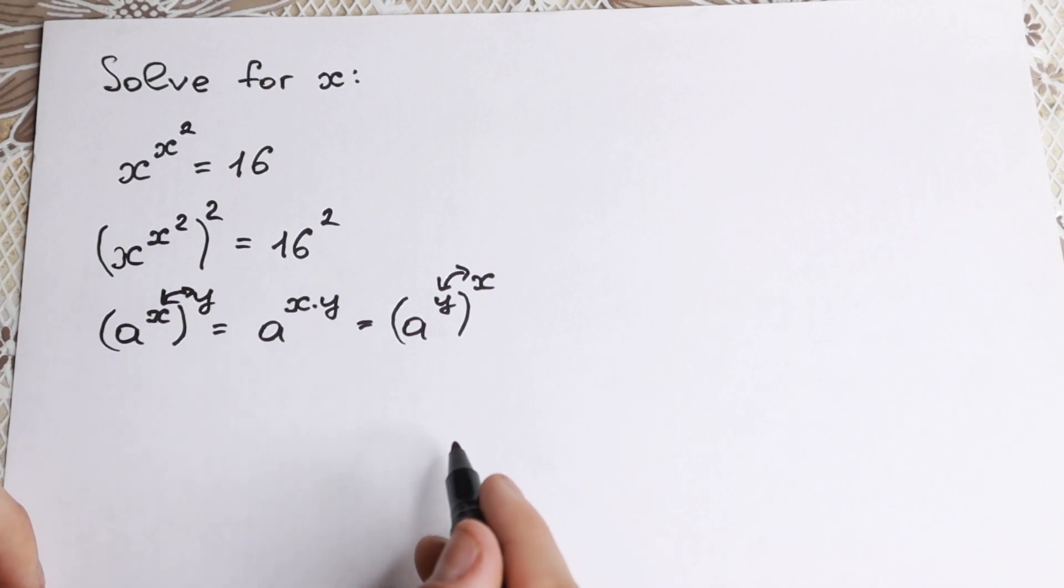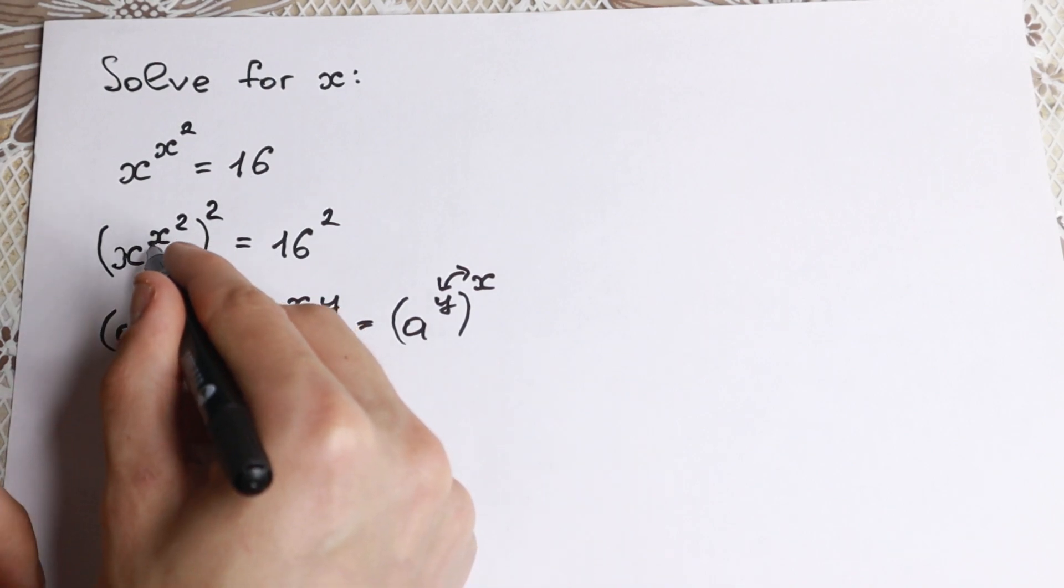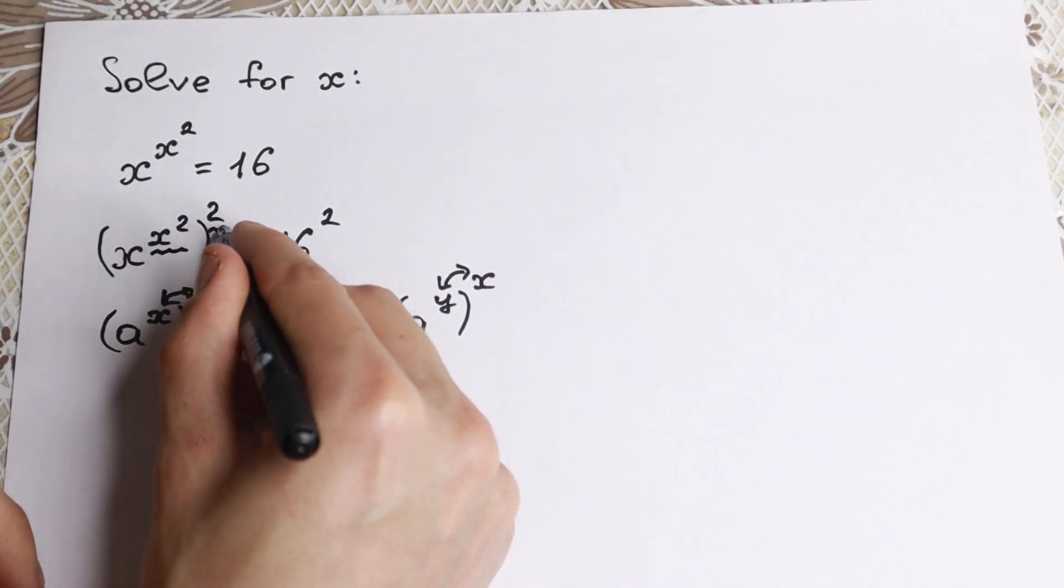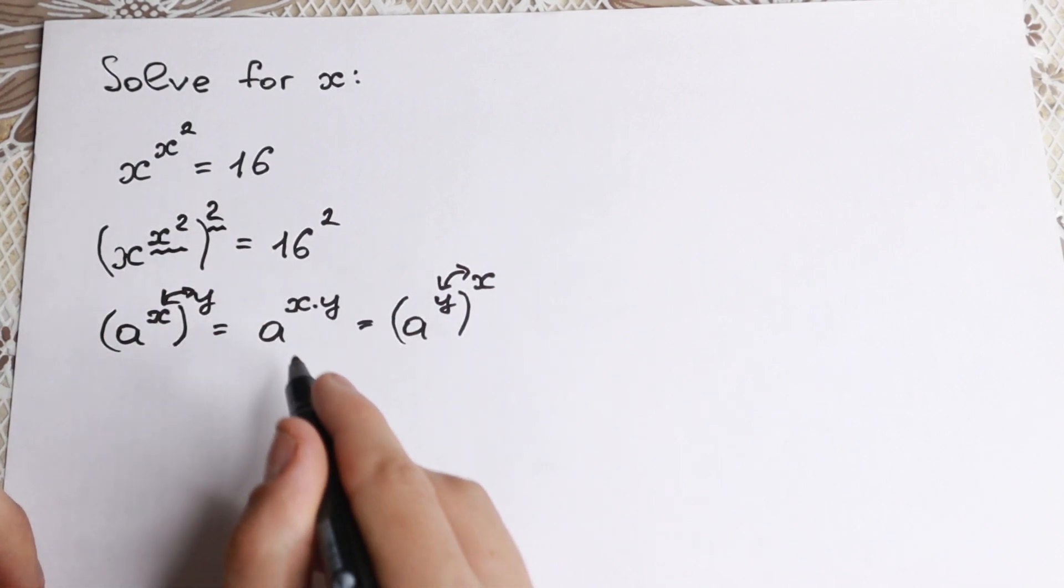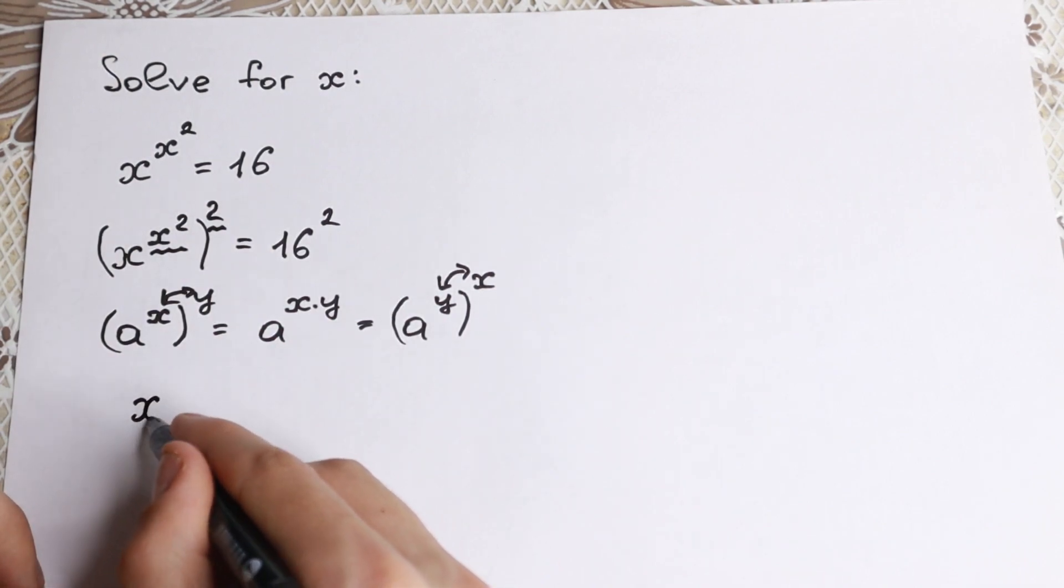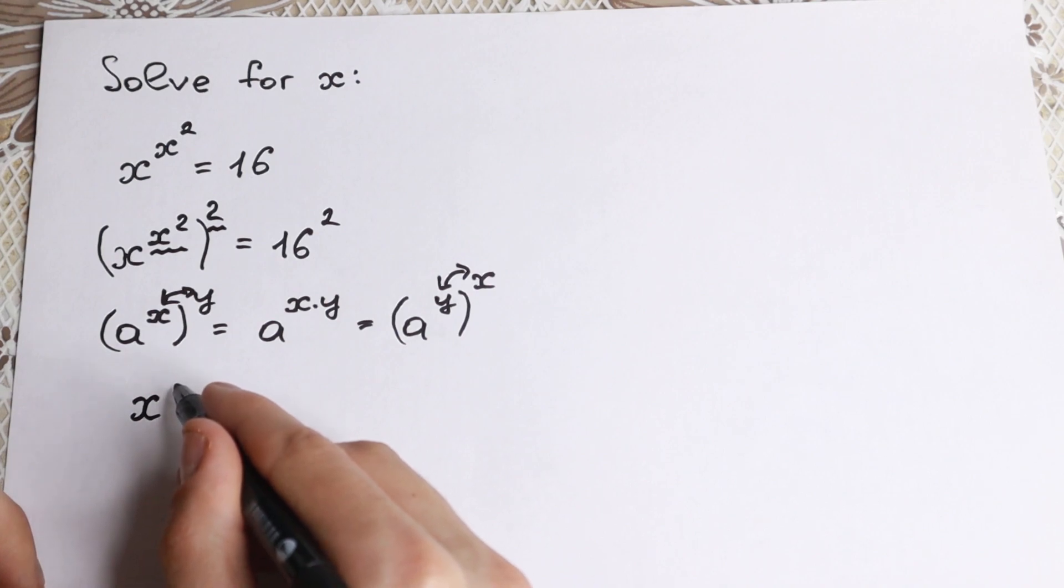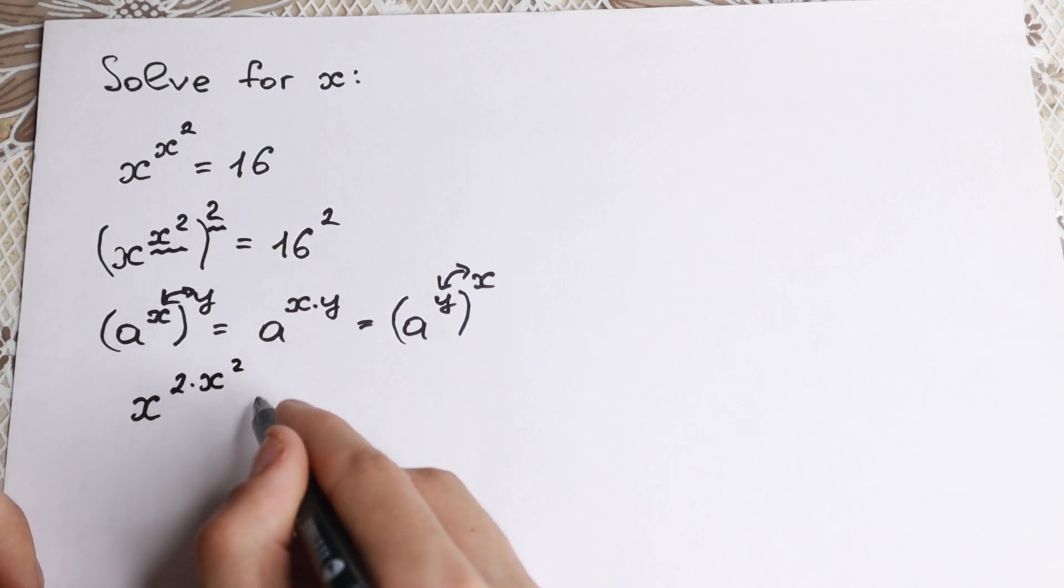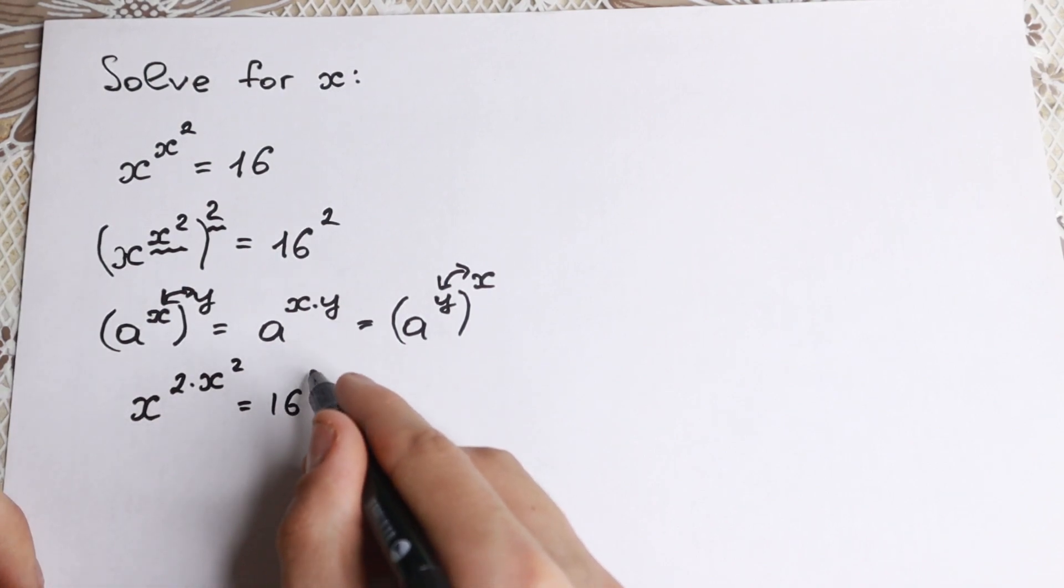But why this rule is really good for us? Take a look to our case. We have x squared and we have the second power. So we can easily write it as a product. So let's do this. We will have x to the power 2 times x squared equal to 16 squared.